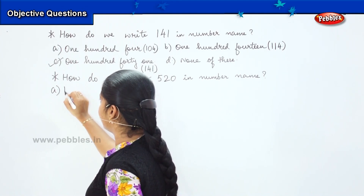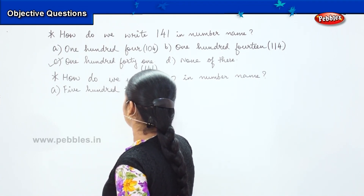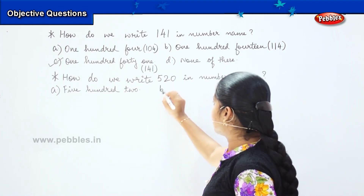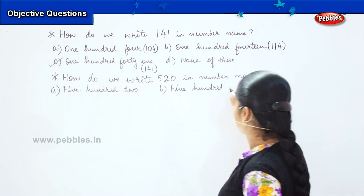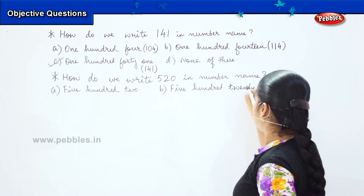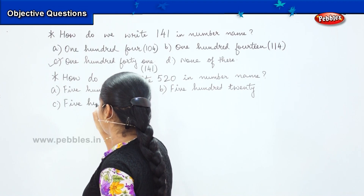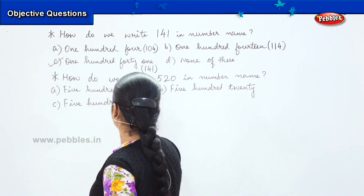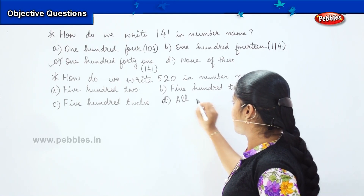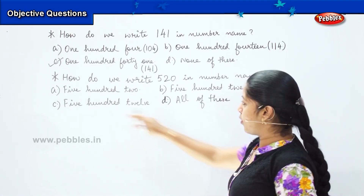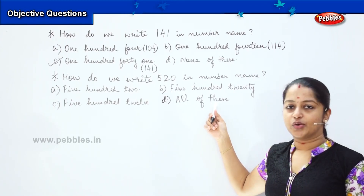The options are: option A — 502; option B — five hundred twenty; option C — five hundred twelve; and option D — all of these. Is it possible for us to have all these answers together? No. So option D is ruled out.